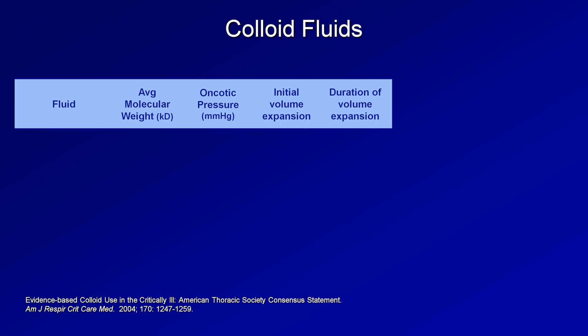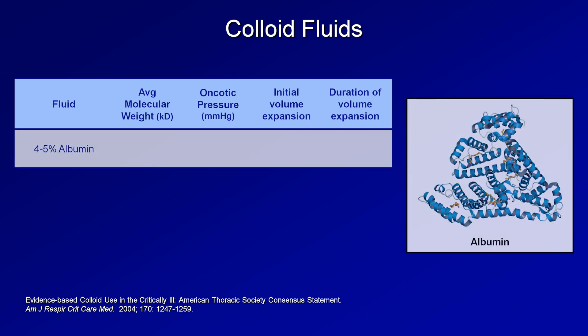For the commonly used colloid 5% albumin, or occasionally 4% albumin, the average molecular weight of the albumin is 69 kilodaltons. Its oncotic pressure is 20-30 mmHg, depending on whether you're using 4 or 5%. The initial volume expansion is approximately 70-100%, meaning if 200 mL of low concentration albumin is infused, the plasma volume will increase by approximately 140-200 mL.